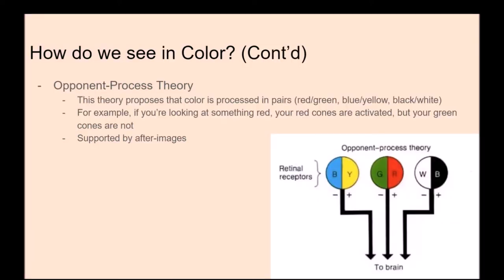The opponent process theory proposes that color is processed in pairs: a red-green pair, a blue-yellow pair, and a black-white pair. For example, if you're looking at something red, your red cones are activated but your green ones are not. This theory is supported by the phenomenon of after-images, which I suggest you look up — there are videos online where you can experience an after-image first-hand, and they're pretty interesting.